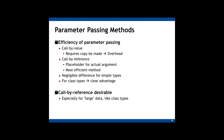Obviously, if the callee function needs to change the local variables of the caller function, call by reference should be used because the callee function cannot access the local variables of the caller function if we use call by value. But there are other reasons to use call by reference — efficiency. For simple types of parameters such as int or double, whether you use call by value or call by reference, the difference in efficiency is negligible. But for class parameters, it is more efficient to use call by reference.